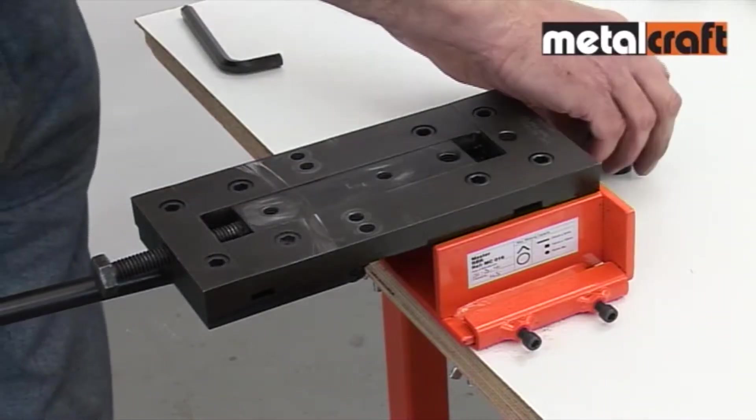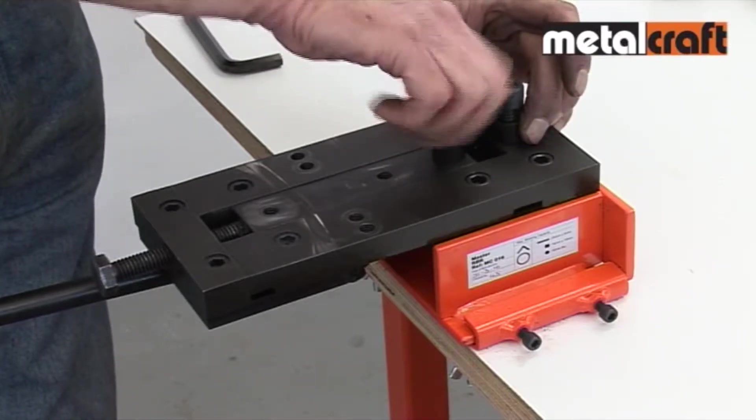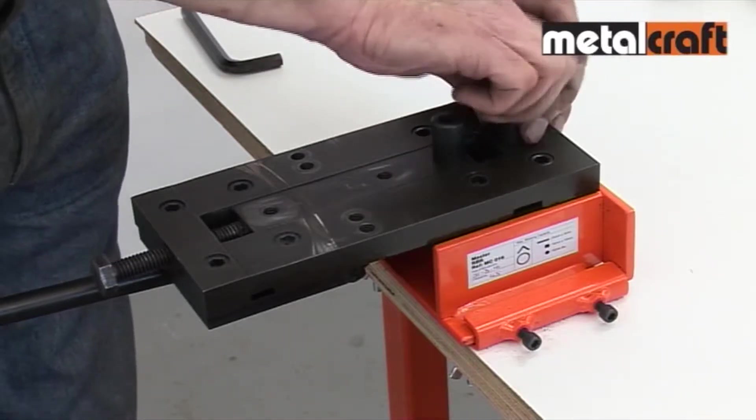To set up the tool for riveting, remove all components from the bed of the machine and fix the rivet posts into the correct holes making sure they're both screwed down tightly.